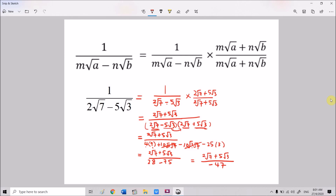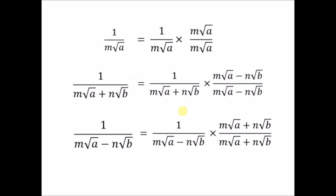So these are the three ways to rationalize expressions where the surd is in the denominator. We always multiply the fraction by the conjugate: for the first type, we multiply by the surd itself; for the second type, we change the addition to subtraction; and for the third type, we change the subtraction to addition.